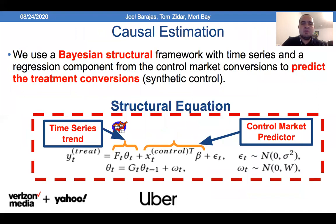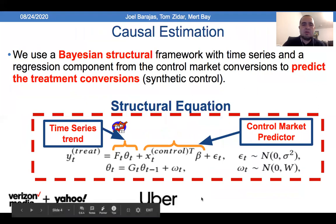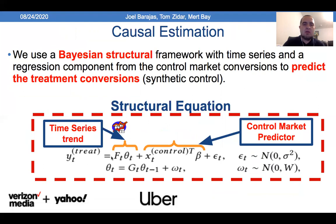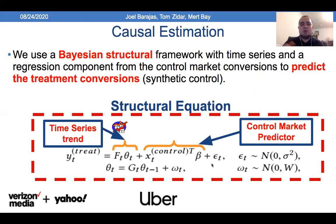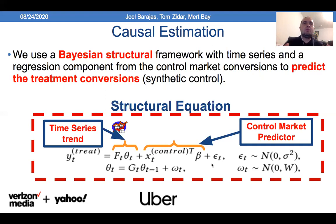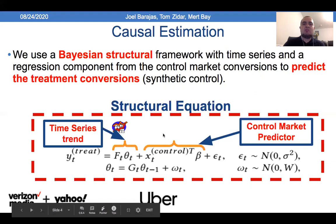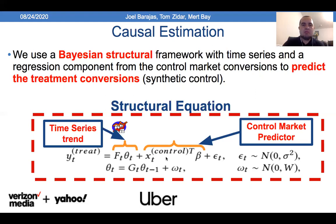For causal estimation, we use a Bayesian structural equation approach — specifically a dynamic linear model with an observation state Y as a function of a time series model using Kalman filtering. We have a control predictor, and since we don't directly observe the control group, we predict the treatment group instead. We find the best predictor — that's why it's called synthetic control, because we are creating the control. We still have a notion of intervention, but the estimation falls into the synthetic control family.